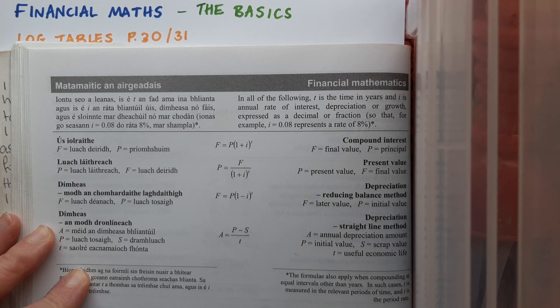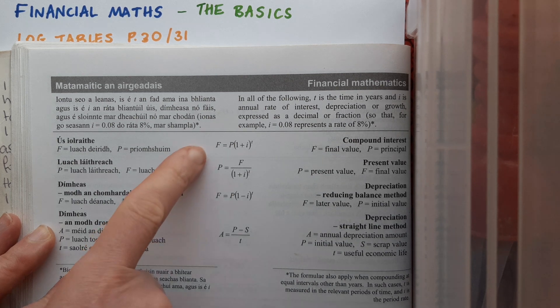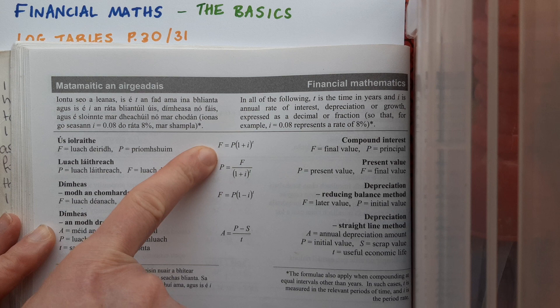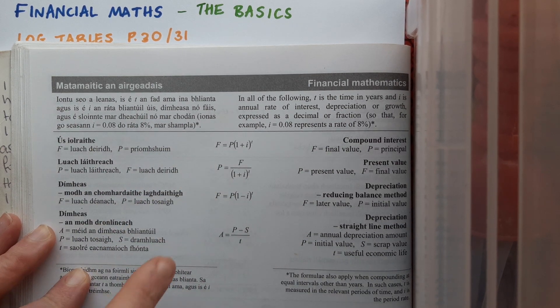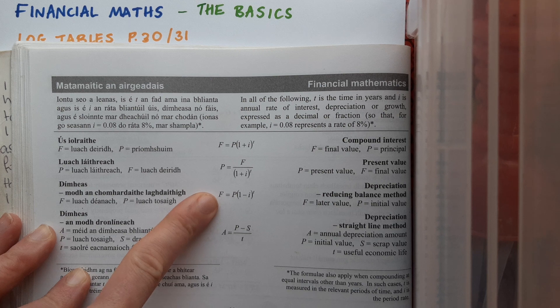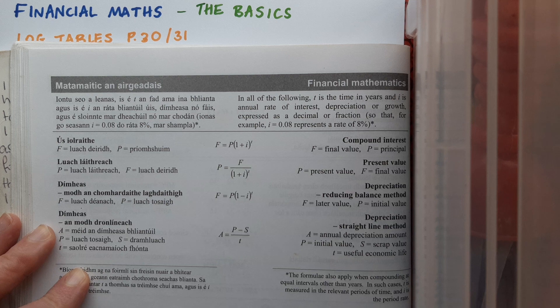We've got some formulas here then for compound interest. We've got the first one here that calculates final value, the next one here that calculates present value, a formula for depreciation on the reducing balance method, and a formula here for depreciation on the straight line method.